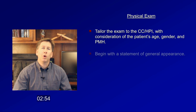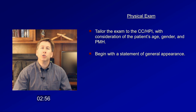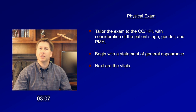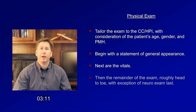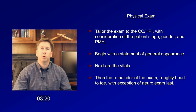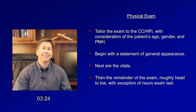On exam, she is a well-nourished elderly woman who appears her stated age and is in no apparent discomfort. Temperature is 98.4, heart rate 58, supine blood pressure 134 over 70, which decreases to 110 over 65 upon standing. Respiratory rate 14 and O2 sat 96% on room air. She has no carotid bruit. Cardiac exam reveals a normal sinus rhythm, normal S1 and S2, a 2 out of 6 early systolic murmur at both upper sternal borders without radiation, no S3 or S4. Her JVP is about 6 cm.